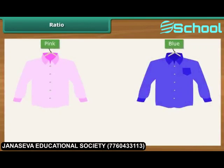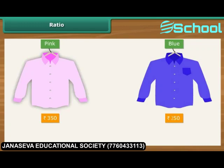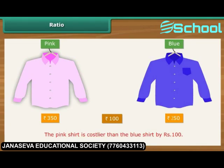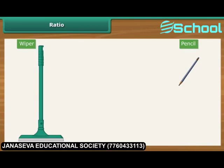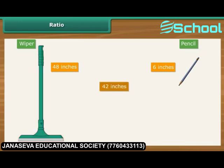Similarly, suppose Ritu buys two shirts, one pink and the other blue, costing Rs. 350 and Rs. 250 respectively. We say that the pink shirt is costlier than the blue one by Rs. 100. Comparison by difference does not make sense when we compare quantities and values that are wide apart. For example, suppose we compare a 6 inch long pencil with a 48 inches long wiper. The wiper is 42 inches longer than the pencil. However, the difference does not bring out clearly the extent of variation in the lengths of the wiper and the pencil.